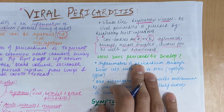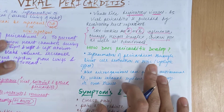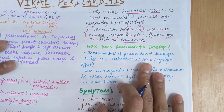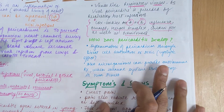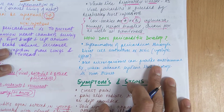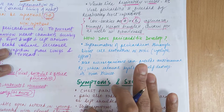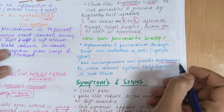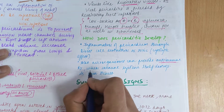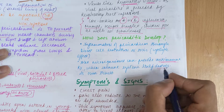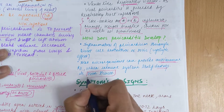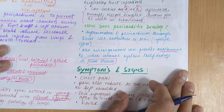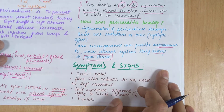Pericarditis develops through inflammation of the pericardium via direct cell destruction — such as a cytolytic or toxic effect — or microorganisms can provoke an autoimmune response in which the immune system destroys its own tissue. So there are two main mechanisms for the development of pericarditis.